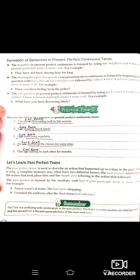Let's learn past perfect tense. Past perfect tense is used to describe an action that happened up to a time in the past — jo actions past ke andar hui hain aur woh ab khatam ho chuki hain. A complete sentence may often have two different tenses. The past perfect is formed by using the auxiliary verb 'had' plus past participle. Example: 'Teresa wasn't at home — she had gone shopping.' 'I washed the pathway after the dust storm had subsided.'